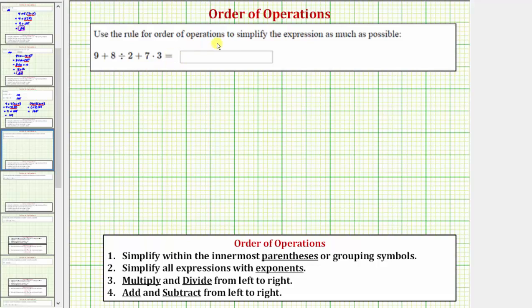We want to use the order of operations to simplify the expression. The directions may also say evaluate the given expression. So we have nine plus eight divided by two plus seven times three.